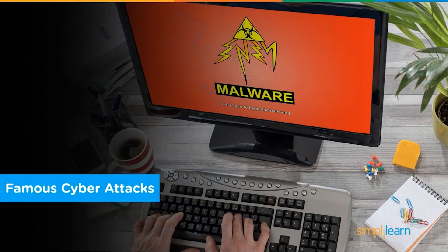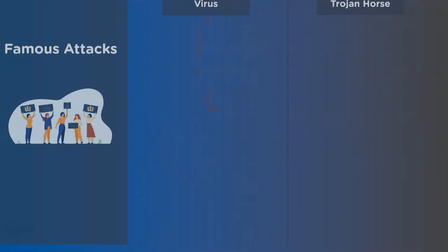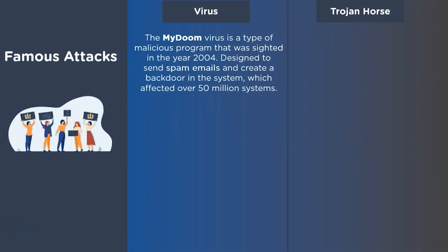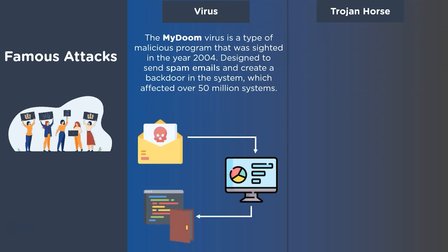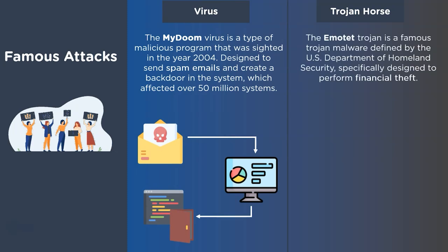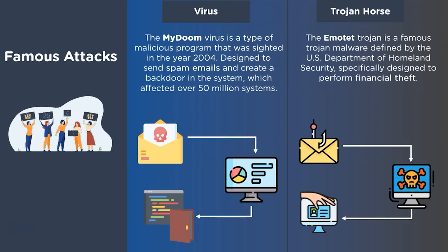Let's look at a famous cyber attack for each category. For viruses, we have the MyDoom virus, identified in 2004, which affected over 50 million systems by creating a network of spam emails to gain backdoor access into systems. For trojan horses, we have the Emotet trojan program, which is specifically designed for financial theft and stealing bank-related information.